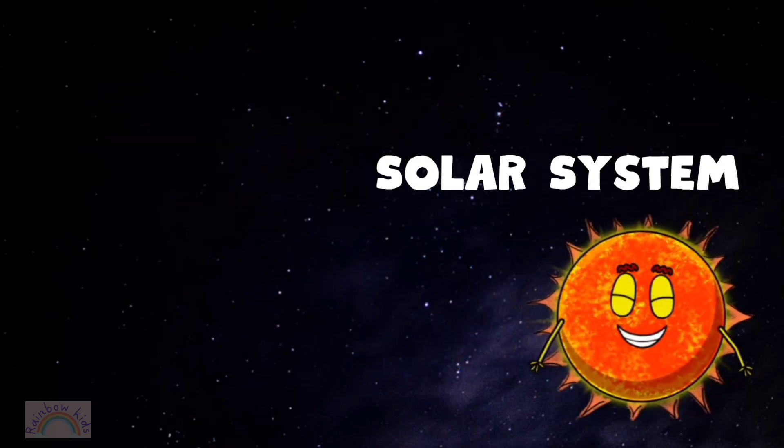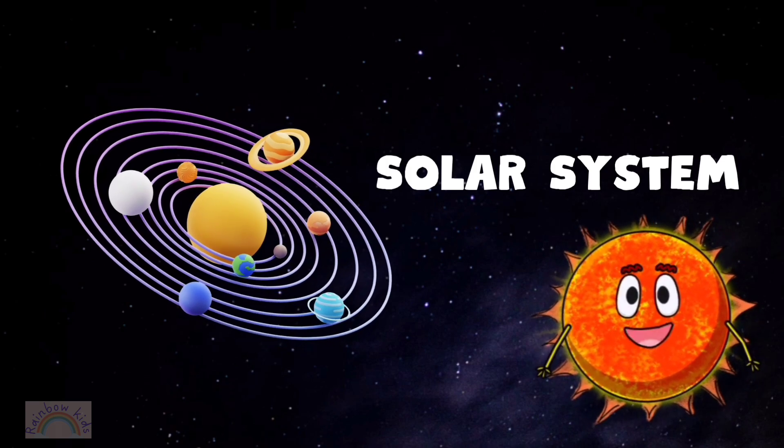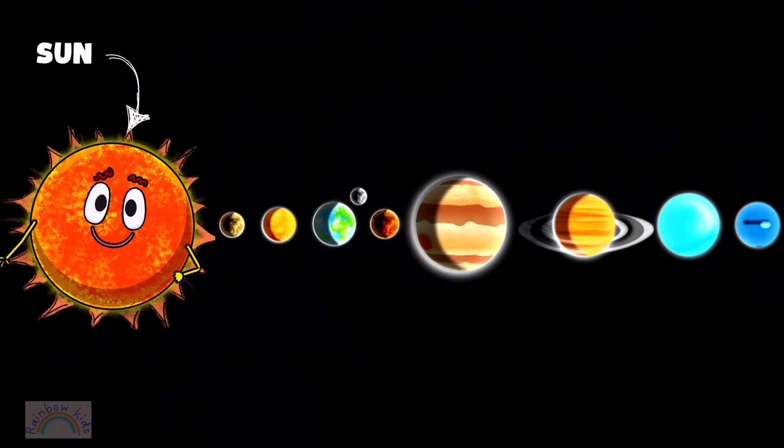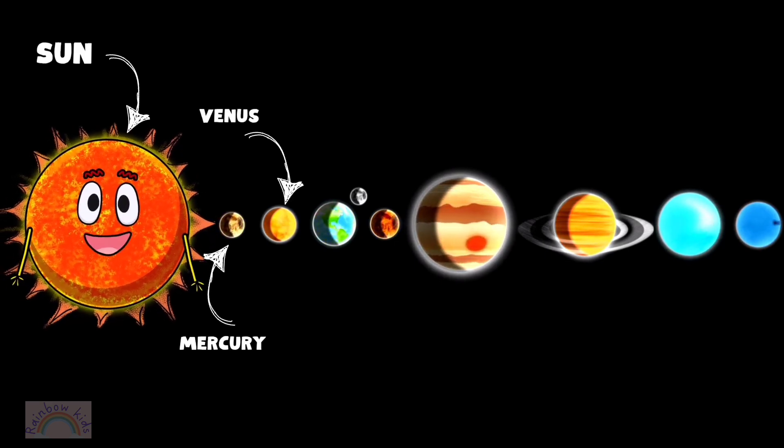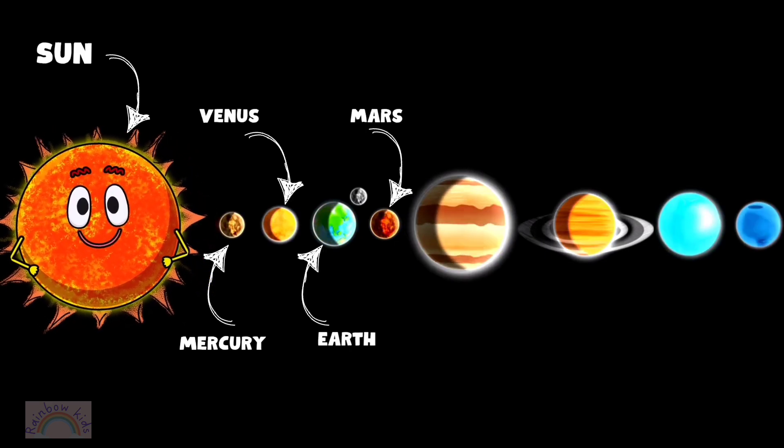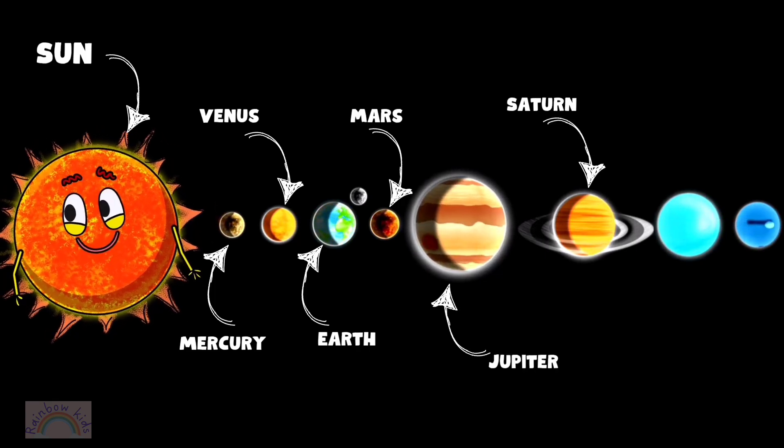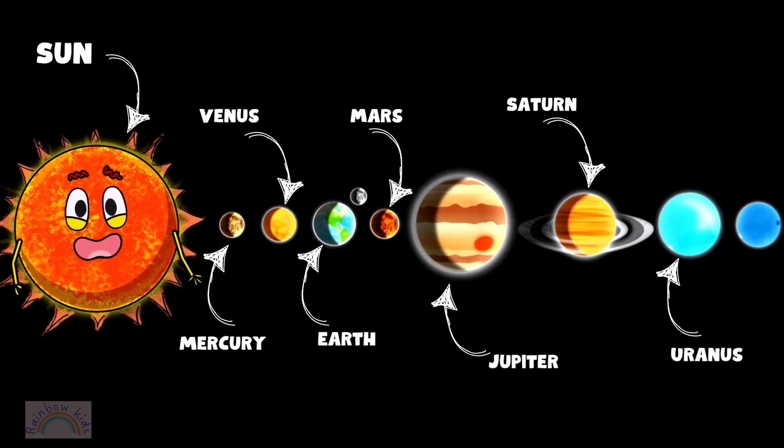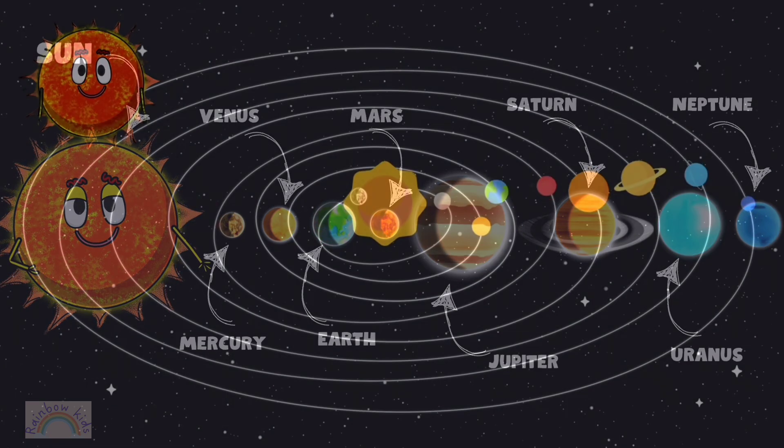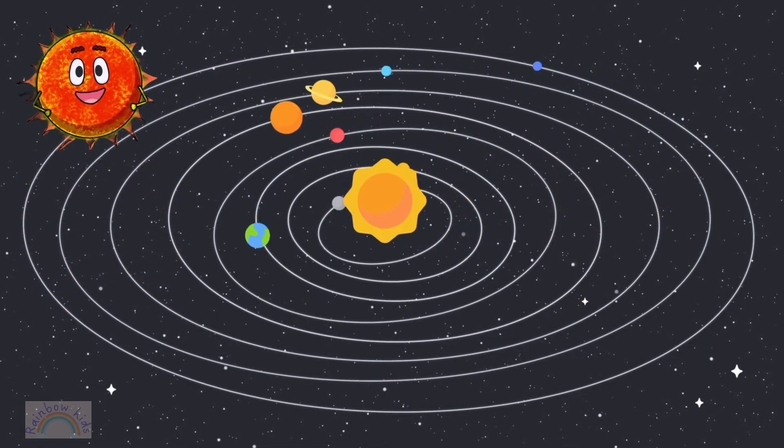This is our solar system. They are Mercury, Venus, Earth, Mars, Jupiter, Saturn, Uranus and Neptune. This is our solar system.